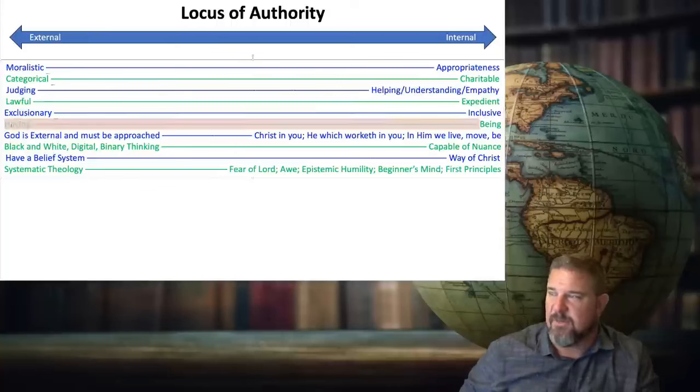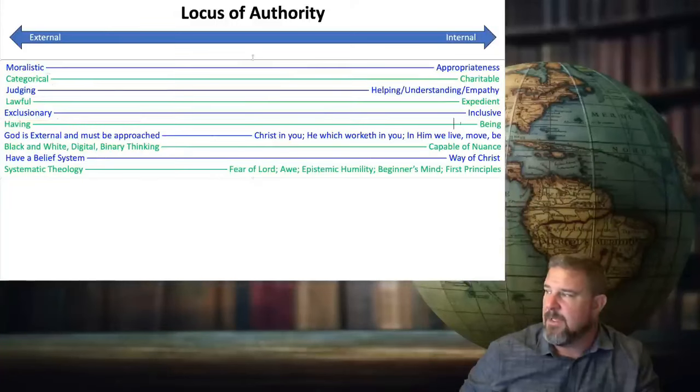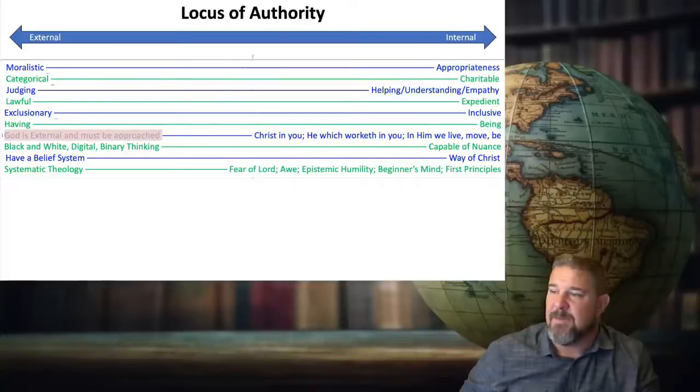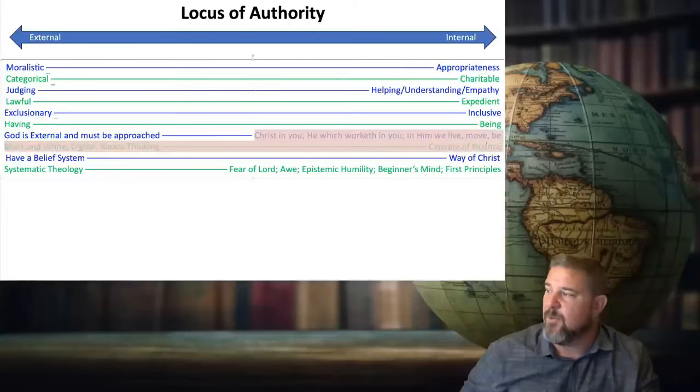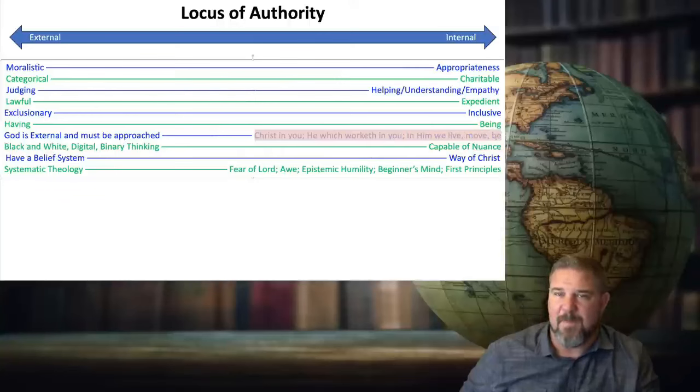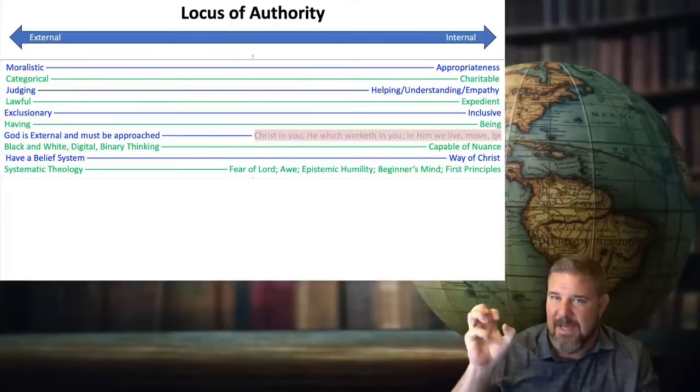External locus of authority is in having mode. Internal is in being mode. External locus of authority, God is some external entity and must be approached. And you hear that in the music and in the preaching and the admonitions. In the internal, you have Christ in you, he which worketh in you, but the will and to do of his good pleasure. In him we live, move, and have our being.